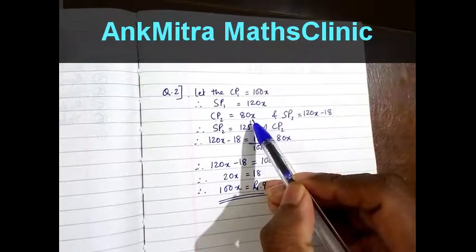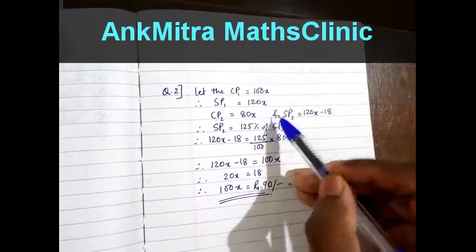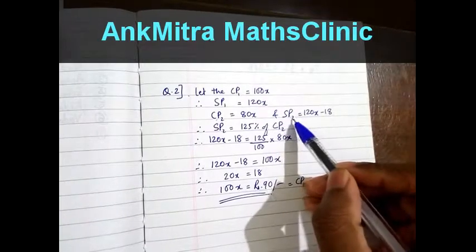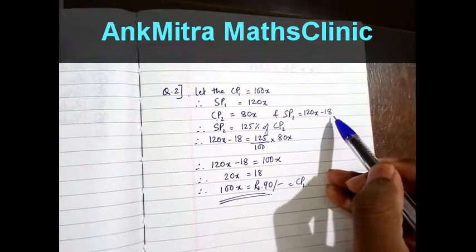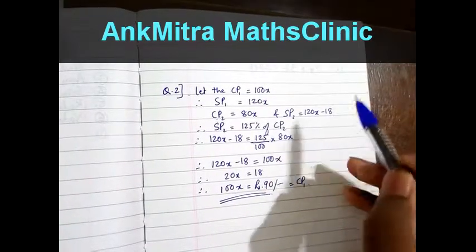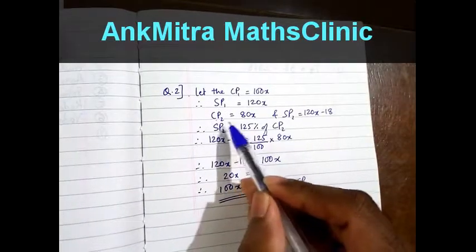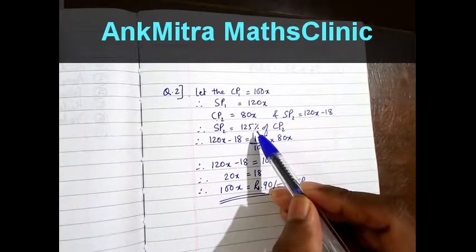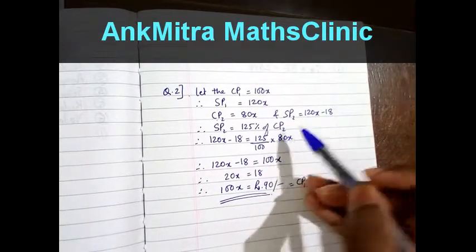His selling price is Rs 18 less, so SP2 is 120x minus 18. He is making a profit of 25% in this transaction, therefore SP2 is equal to 125% of CP2.